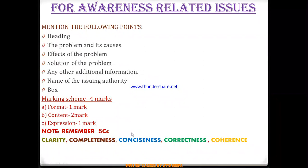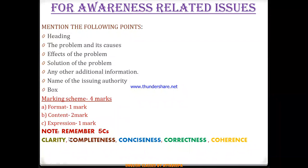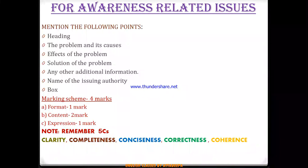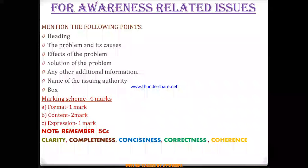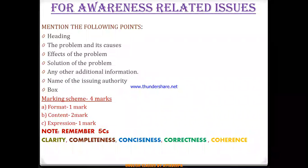One more important thing I would suggest: remember the Five C's, which are very important in any composition. First is clarity — whatever you are writing should be clear and lucid, not ambiguous, because ambiguity makes it difficult for the reader to understand what you want to convey. Second is completeness — whatever idea you want to convey should be complete; it should not be left in between, and the reader should also feel that whatever you have written is complete in nature.